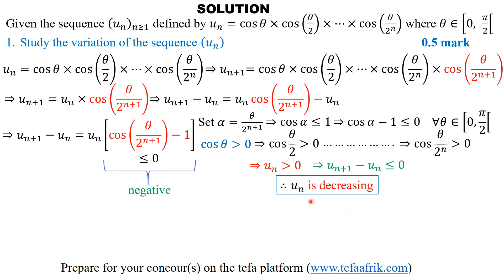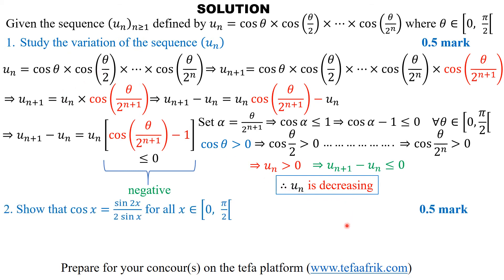We can conclude that the sequence UN is decreasing. If it were strictly less than 0 we would say strictly decreasing, but since it is less than or equal to 0, it is simply decreasing. So the conclusion of studying the variation is: the sequence UN is decreasing.